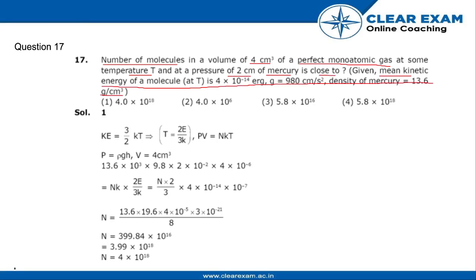Kinetic energy is given as 3/2 kT, so T is equal to 2E/3k. We put this value of T in PV equals NkT. Also, P equals ρgh and V is 4 cm³.